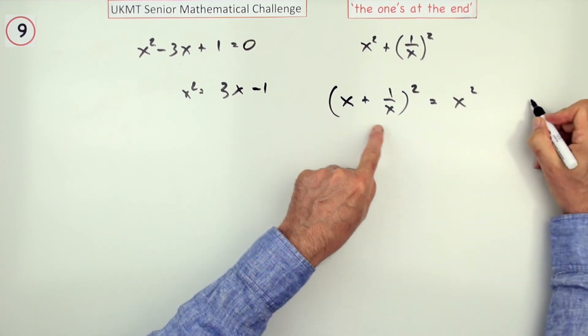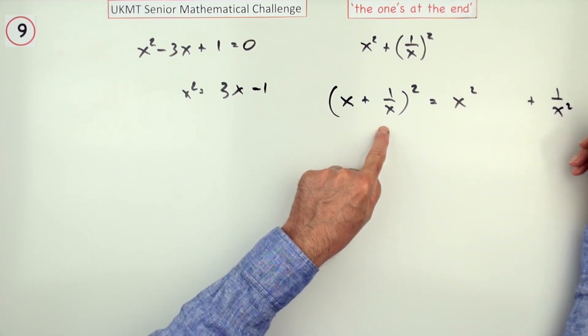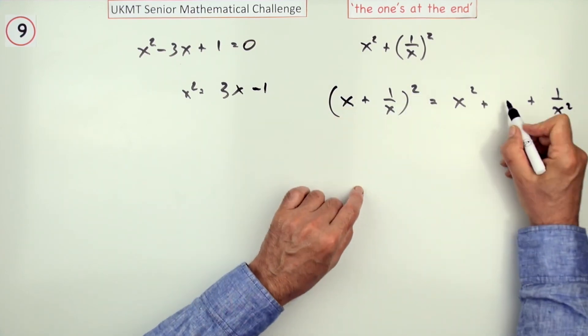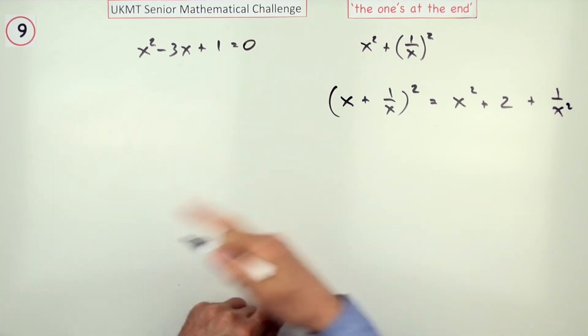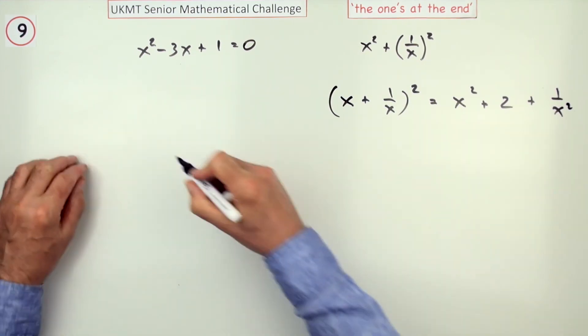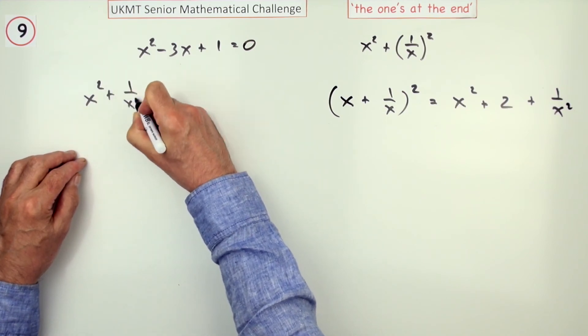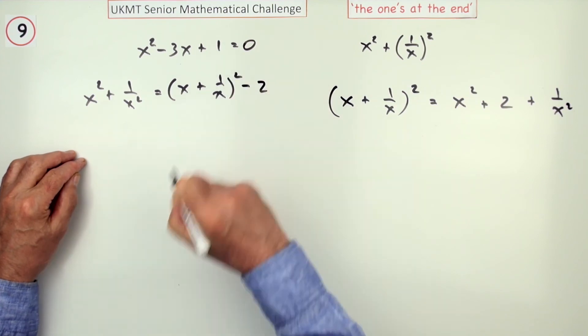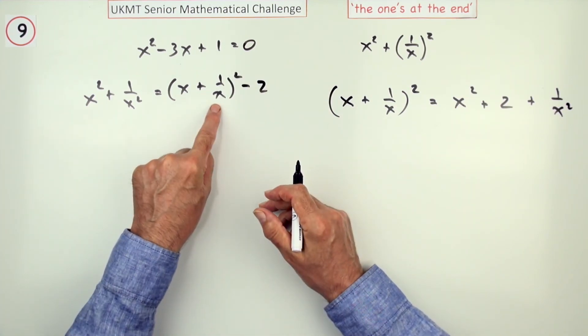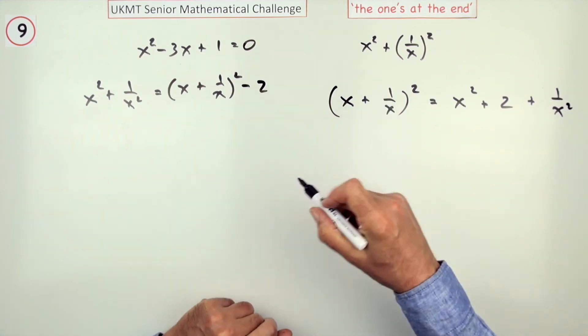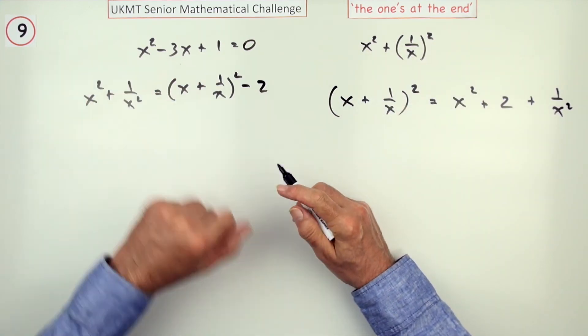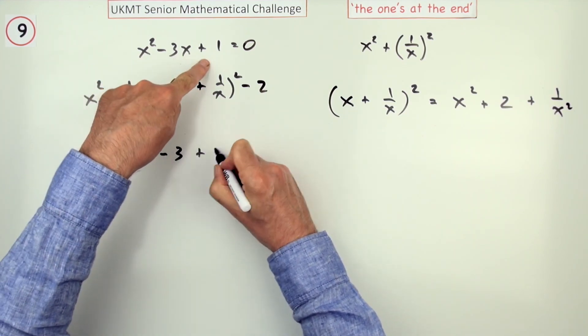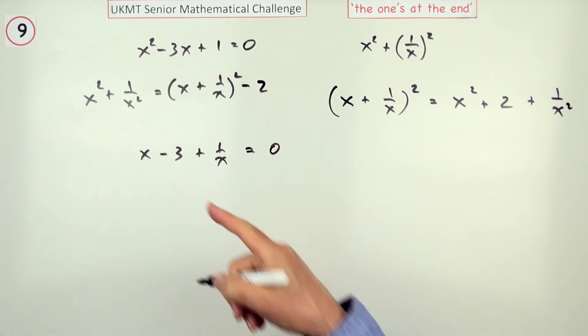If you take X plus 1 upon X and square it, then that gives you square the first, square the last, and very nicely in this case, twice the product just becomes a 2. So, that's the route I'm going to follow. I'm going to follow the route whereby X squared plus 1 upon X squared is the square of X plus 1 upon X, but less 2. But, I've still got to get X plus 1 upon X, but I can get that by dividing. That's what should have rung a bell when you thought, oh, I'll divide by X squared.